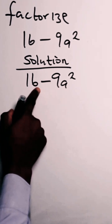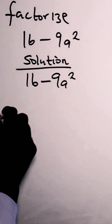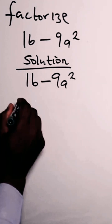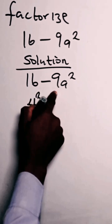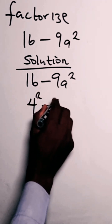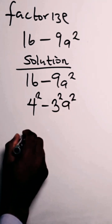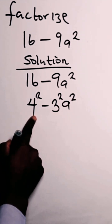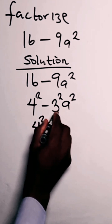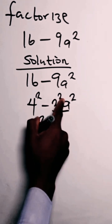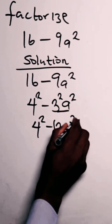For 16 and 9, we can put them in index form. So for 16, we can write this as 4 squared, minus. For 9, we can write it as 3 squared. We have this as a squared. So we can write this as 4 squared minus — taking these together, they have the same power — so we have 3a squared.